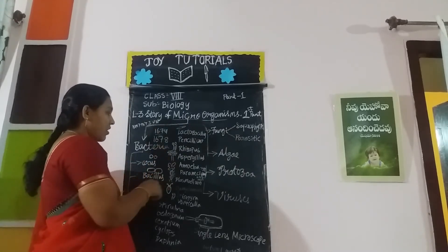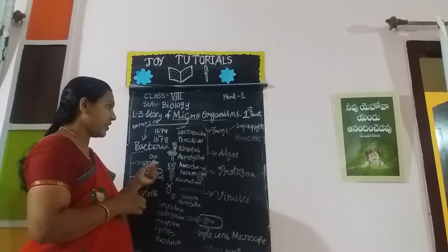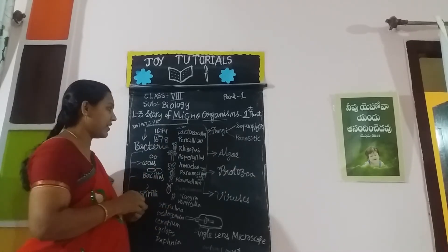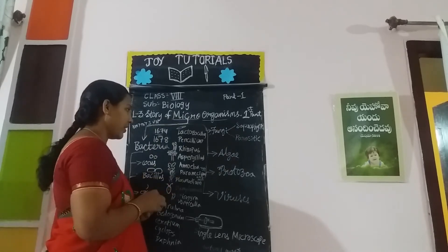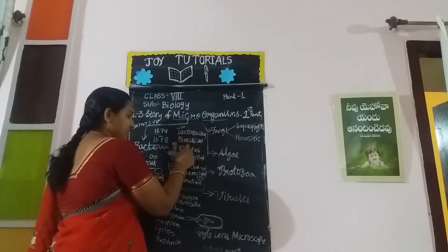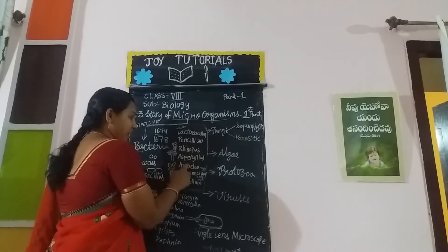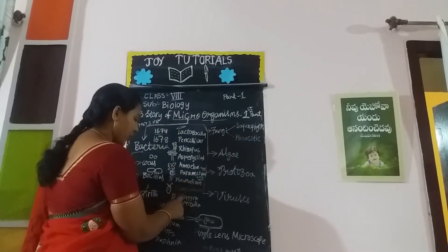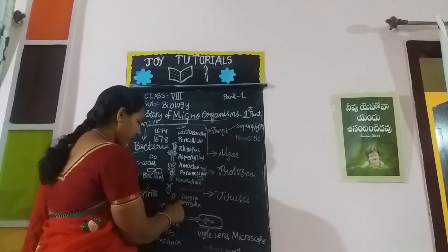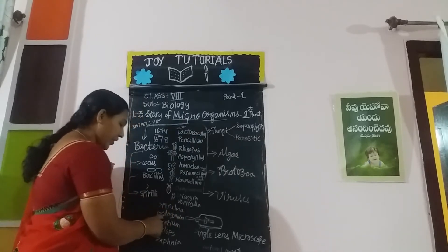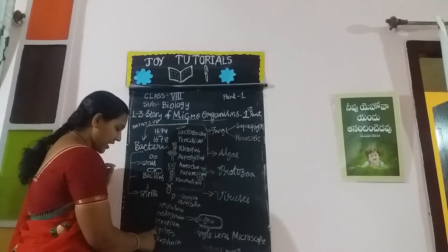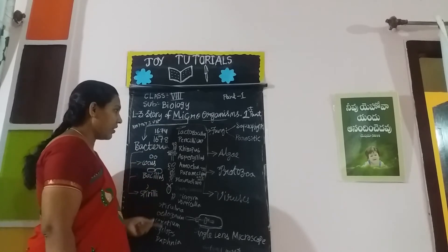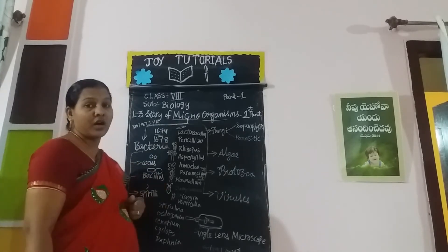These are all microorganisms. After preparing several lenses, he found so many organisms: Lactobacillus, Penicillium, Rhizopus, Aspergillus, Amoeba, Paramecium, Plasmodium, Chlamydomonas, Spirogyra, Vorticella, Spirulina, Oedogonium, Ceratium, Cyclops, Daphnia, and many more.